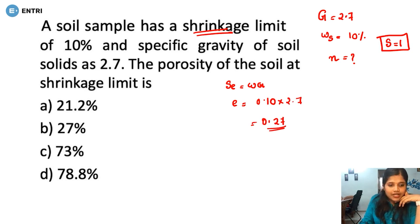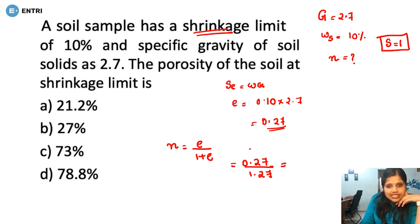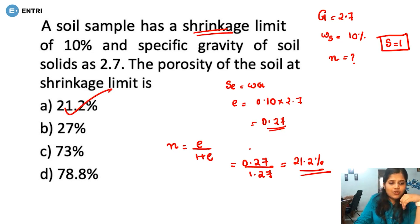Now we convert void ratio to porosity. Porosity n equals e divided by (1 plus e), which is 0.27 divided by 1.27, giving approximately 0.21. So the answer is 21.2%. Option A is the correct answer. Options were: A is 21.2%, B is 27%, C is 73%, D is 78.8%.